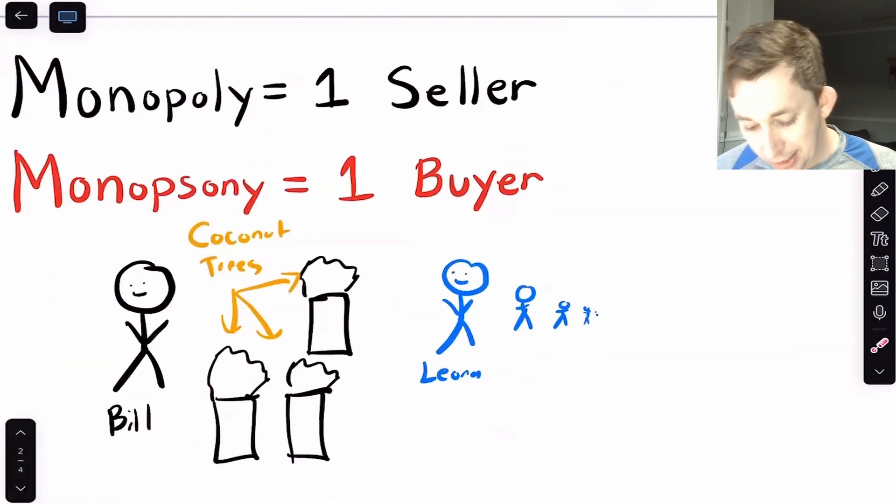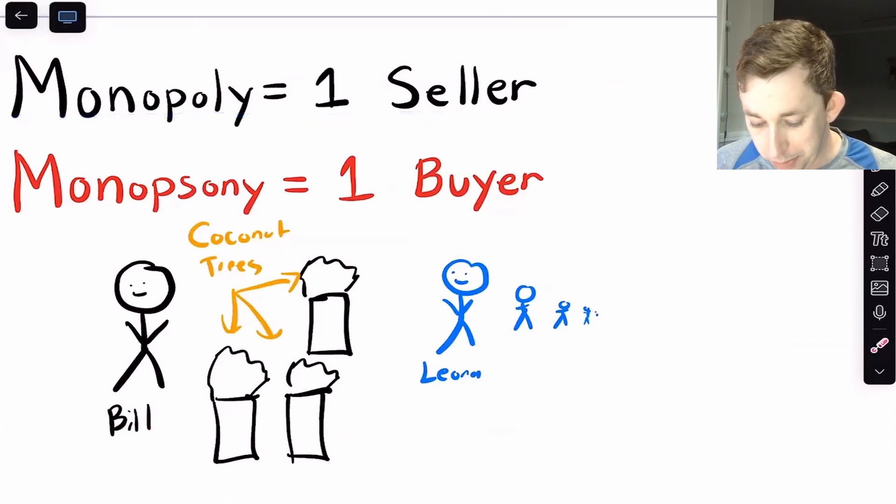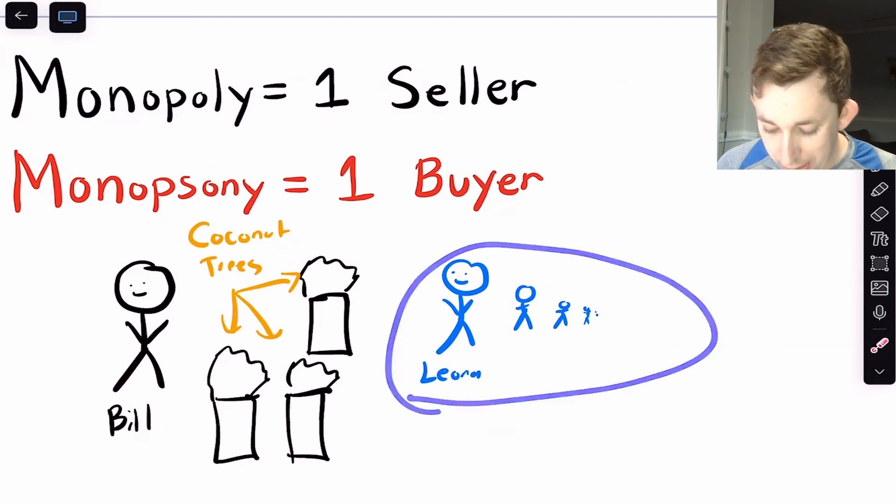The basic idea is that in a monopoly you have one seller. We've talked about monopolies before, but in a monopsony, you only have one buyer. This is really applicable for the labor market, where maybe Bill is the only employer in town. So all of the Leonas, if they want a job,